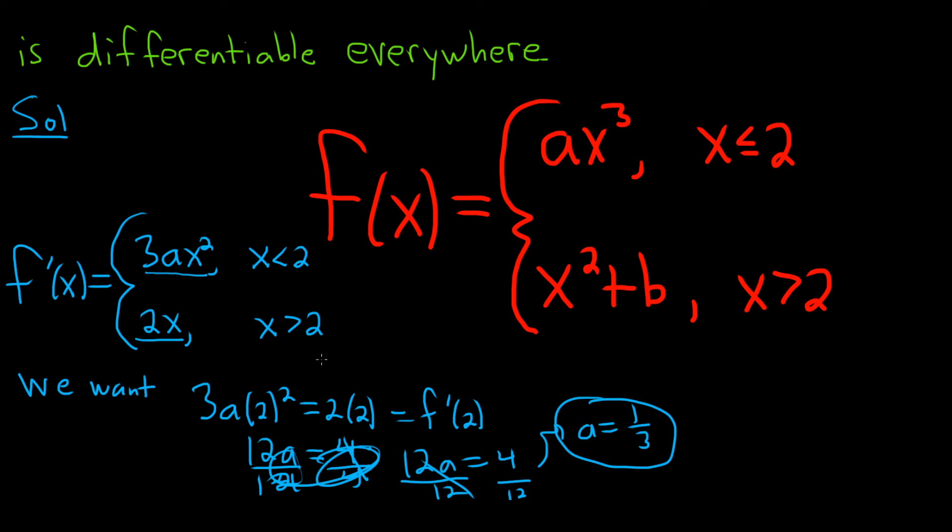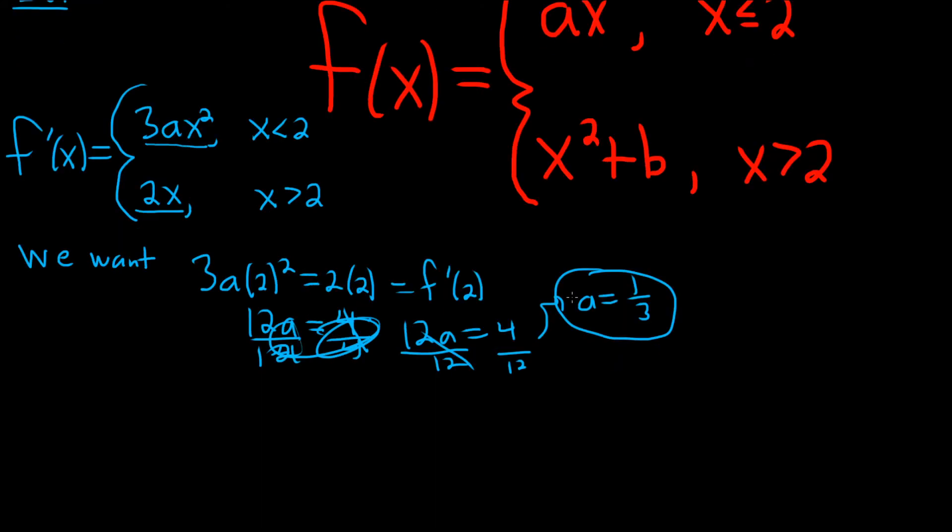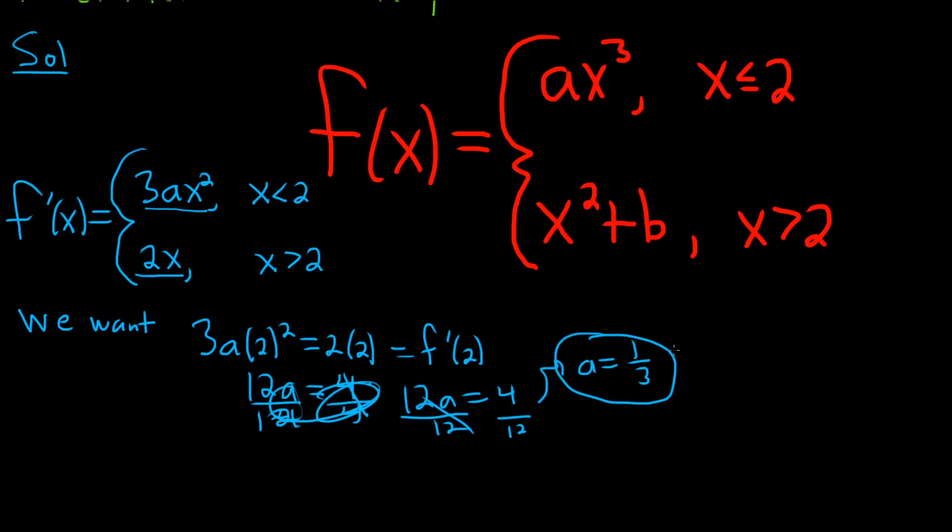But now we need b. We need to figure out what b is. So we already used the fact that it's differentiable. Because it's differentiable, it's also continuous. And in order for it to be continuous, each piece has to be continuous, and they are. And the only possible issue is at 2.